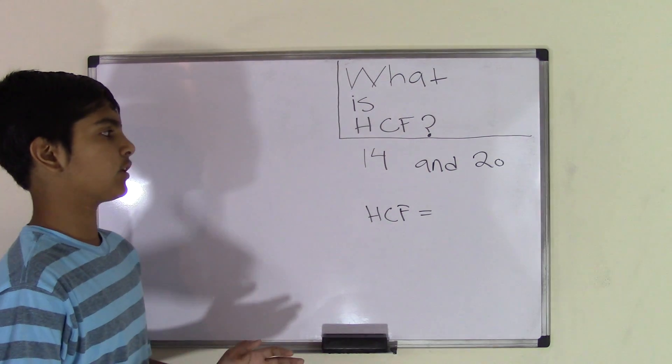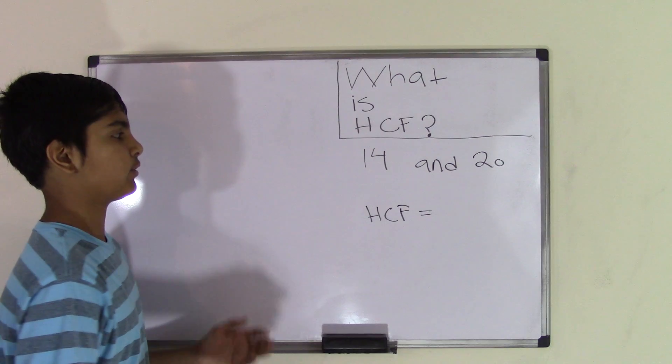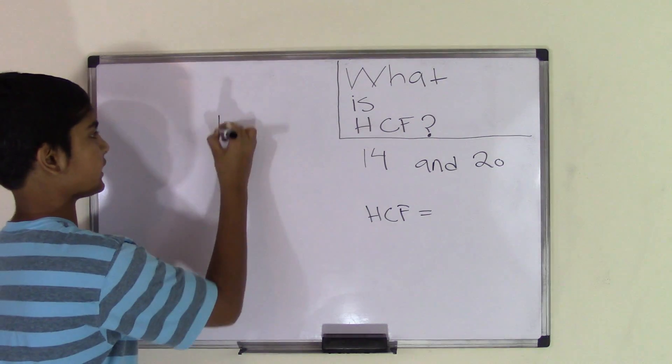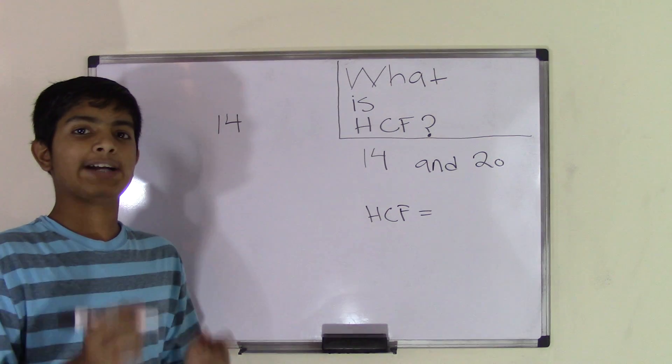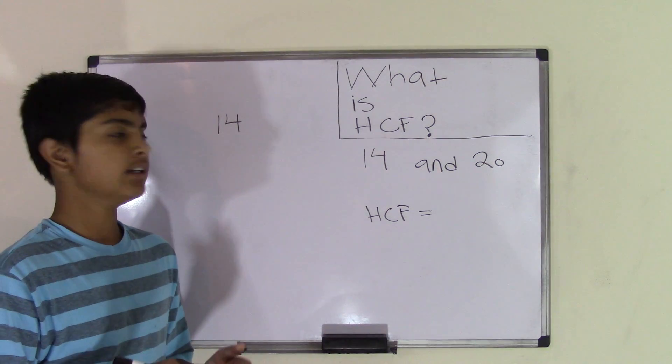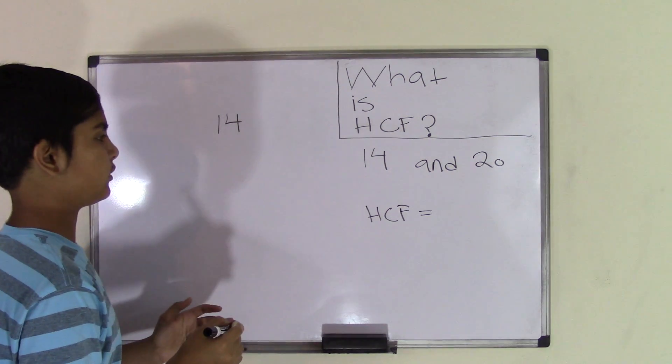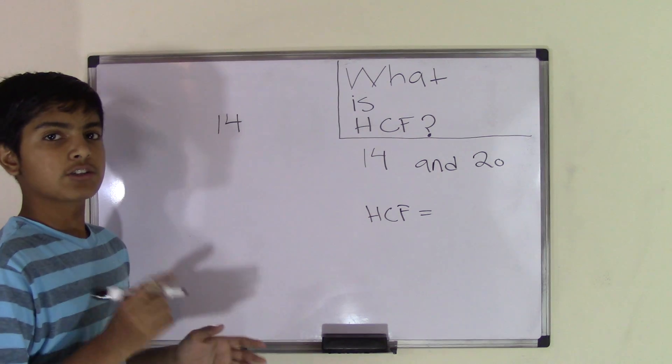First thing we're going to do is find the factors of each number. So let's first take the number 14. To find the factors, I'm going to use the simple factor tree method. It's really easy and it's going to get you the factors faster.